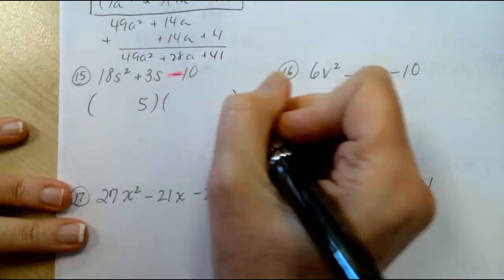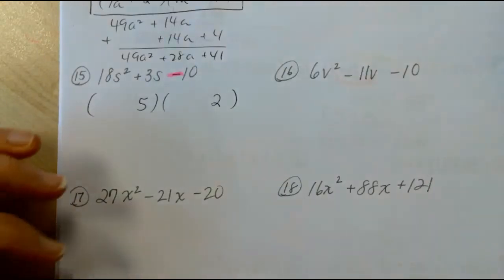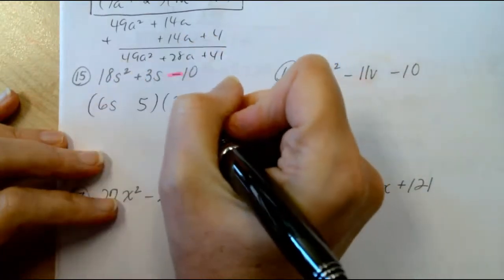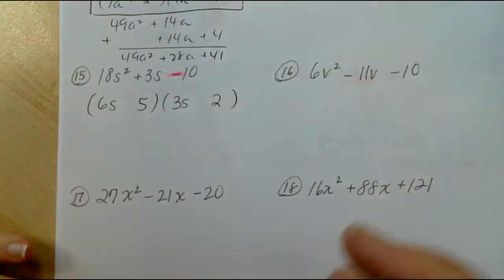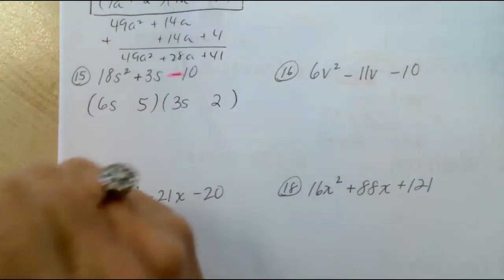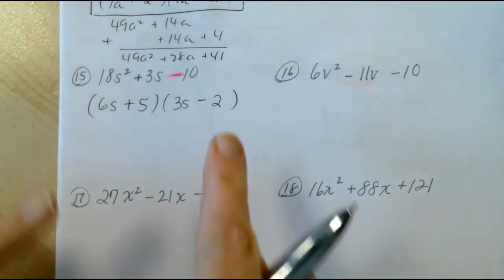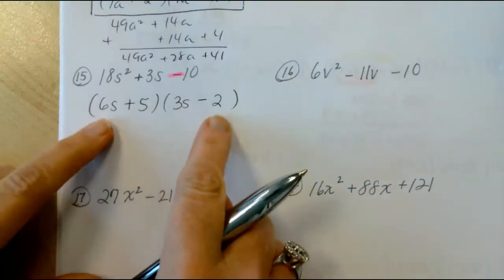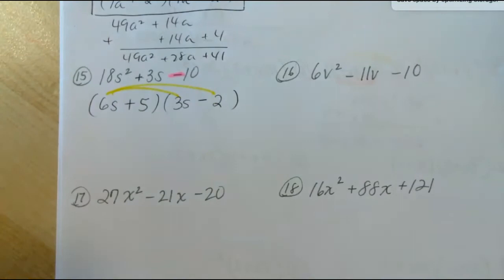So to get a 10, it's probably going to be 5 times 2. And to get an 18, it's probably going to be a 3 and a 6 or a 2 and a 9. Let's try a 3 and a 6, so 6s, 3s. That's where our 18 is coming from. 5 times 2 is 10. This is my guess. Let's see what happens. So if we want a plus 3 in the middle, we need to make our plus be here and our minus be here. This is my guess because this is going to give me a negative 12 on the outside and a positive 15 on the inside. And a negative 12 and a positive 15 is where the 3 is going to come from.